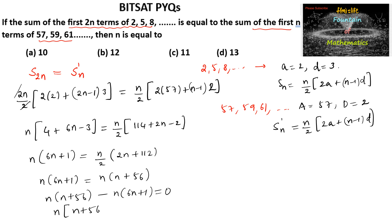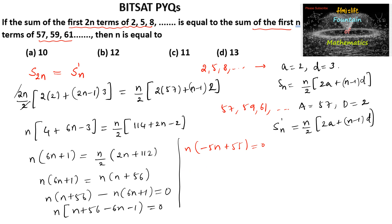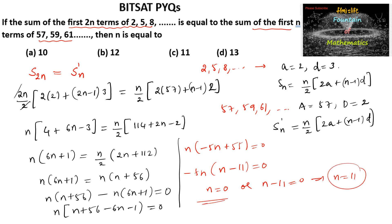This simplifies to n times (−5n + 55) = 0, or n times (n − 11) = 0. So either n = 0 or n = 11. Since n cannot be 0, n = 11. The answer is option C.